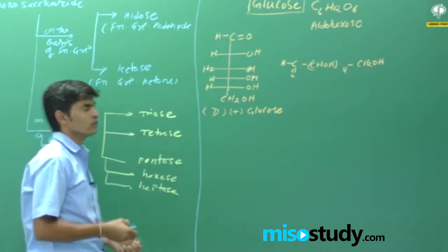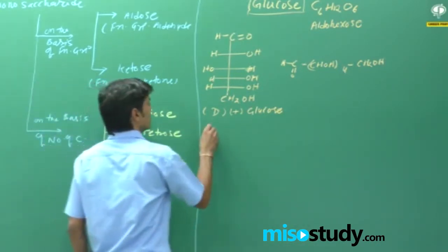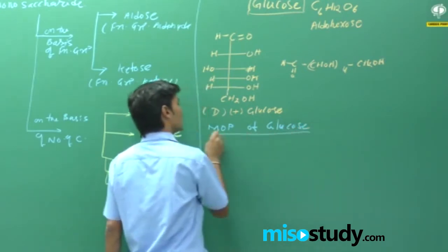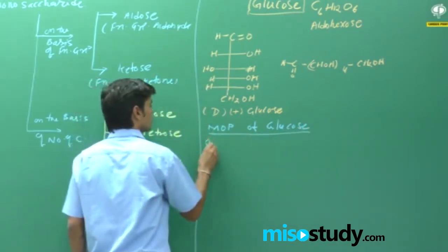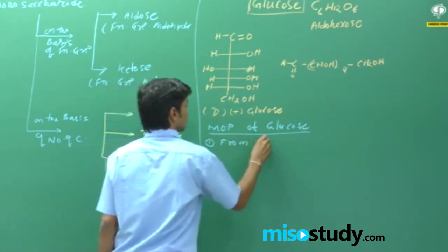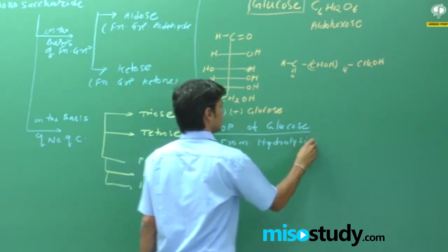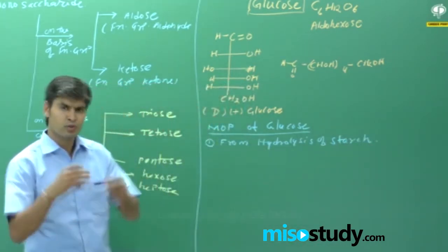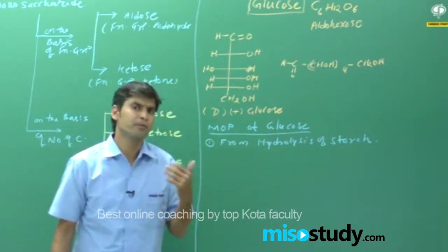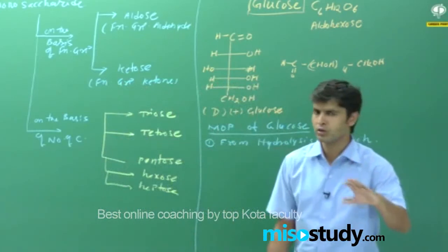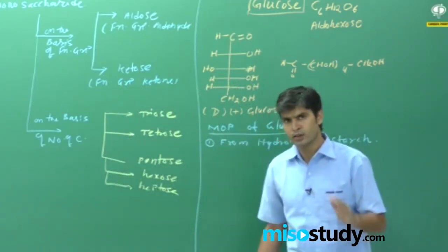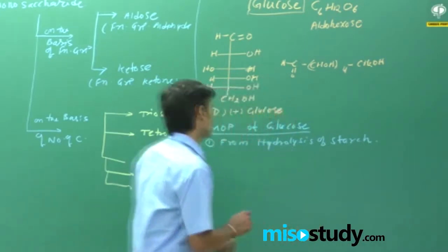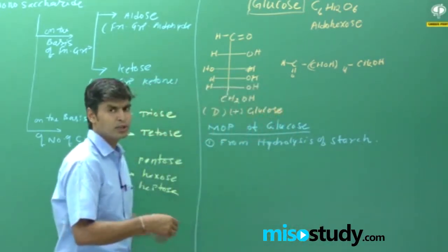Now the preparation of glucose — one method is hydrolysis of starch. Starch is a polysaccharide and it is made up of glucose units using alpha-D-glucose. So if we do starch hydrolysis, when we hydrolyze polysaccharides, they break down into monosaccharide units, that is glucose. In this way, we get glucose from starch hydrolysis.